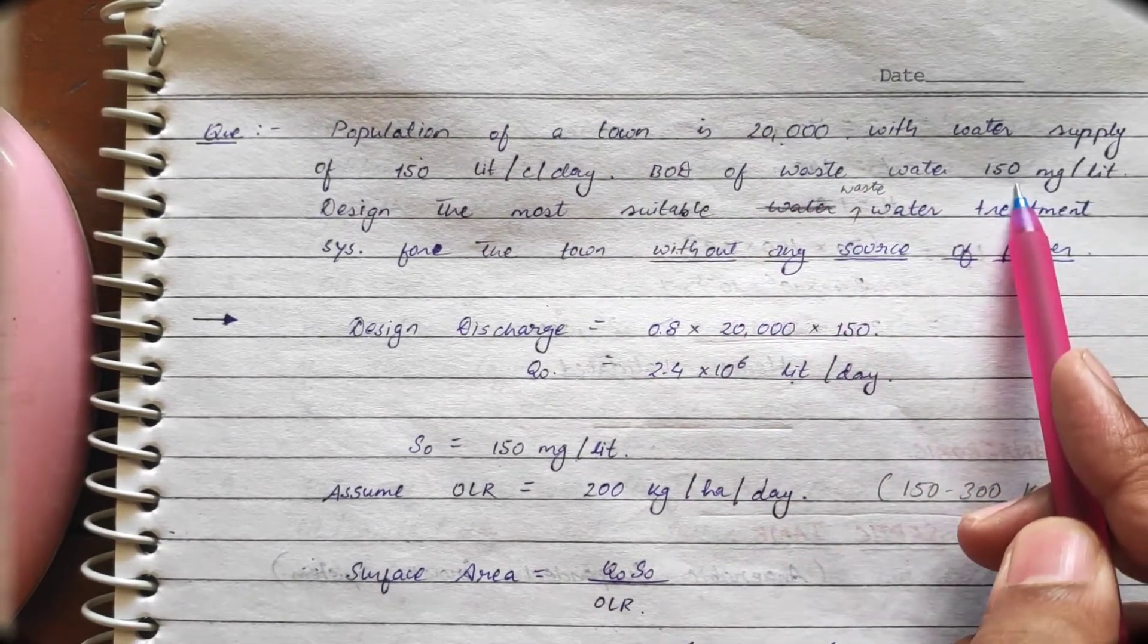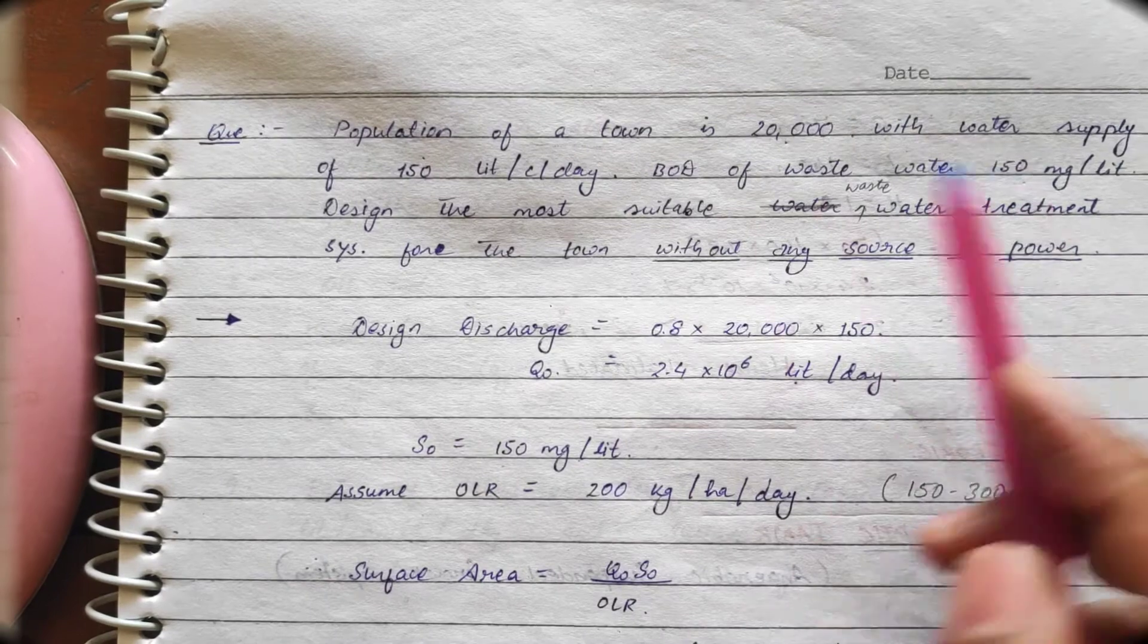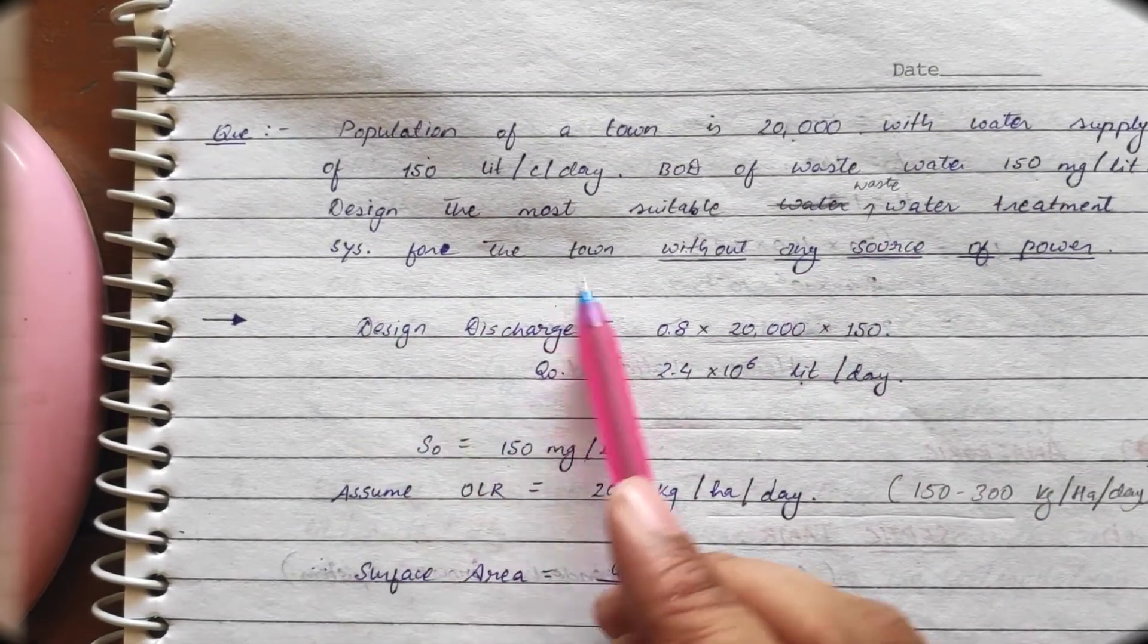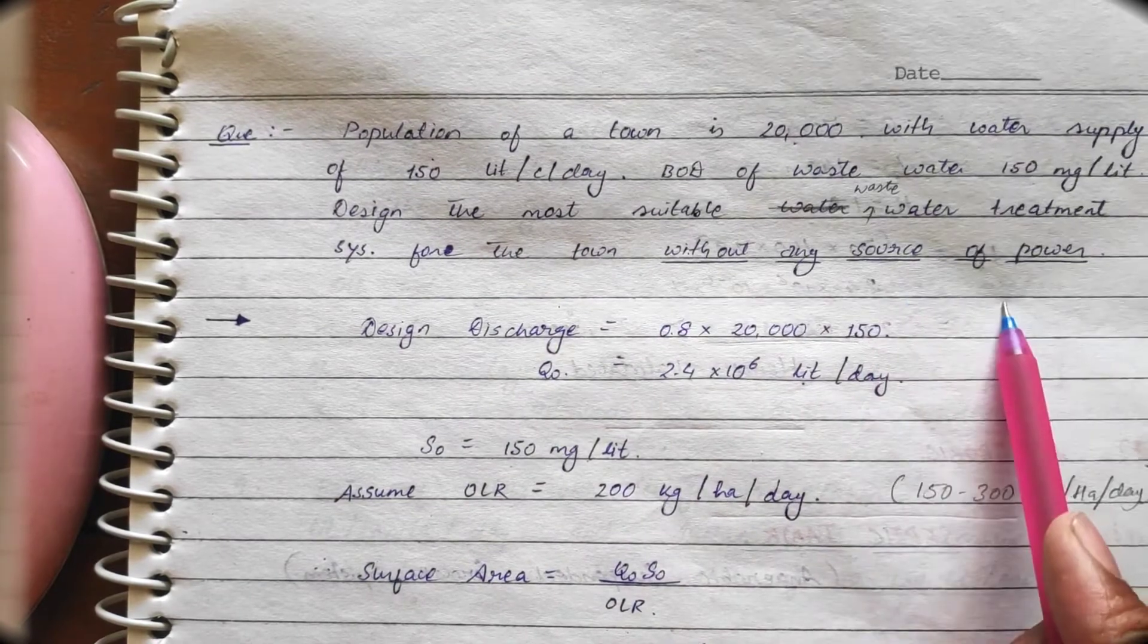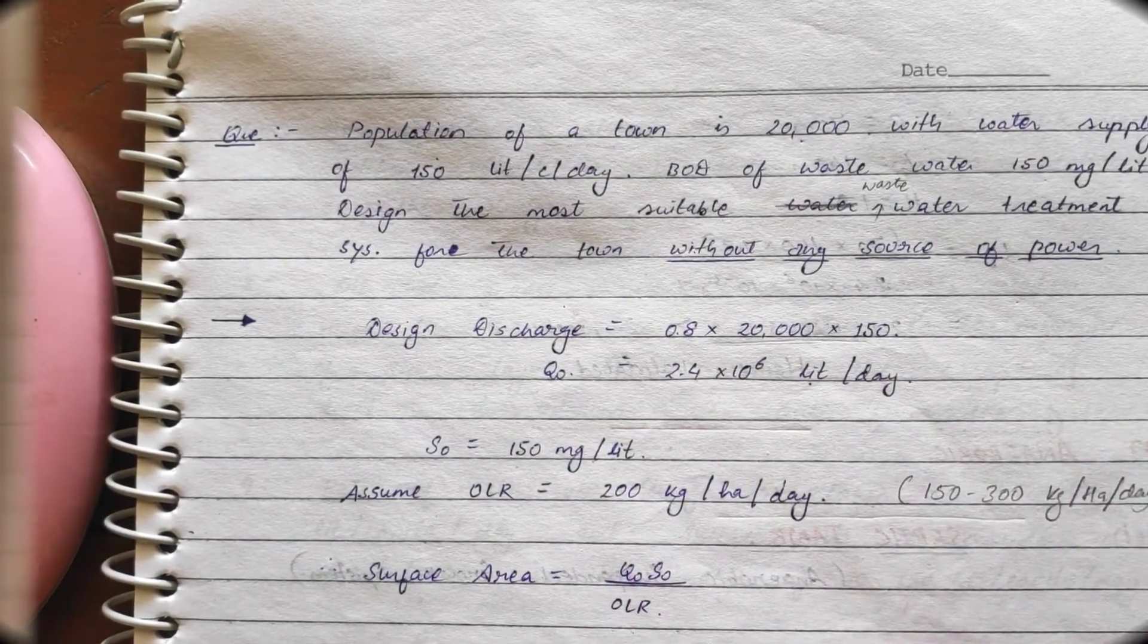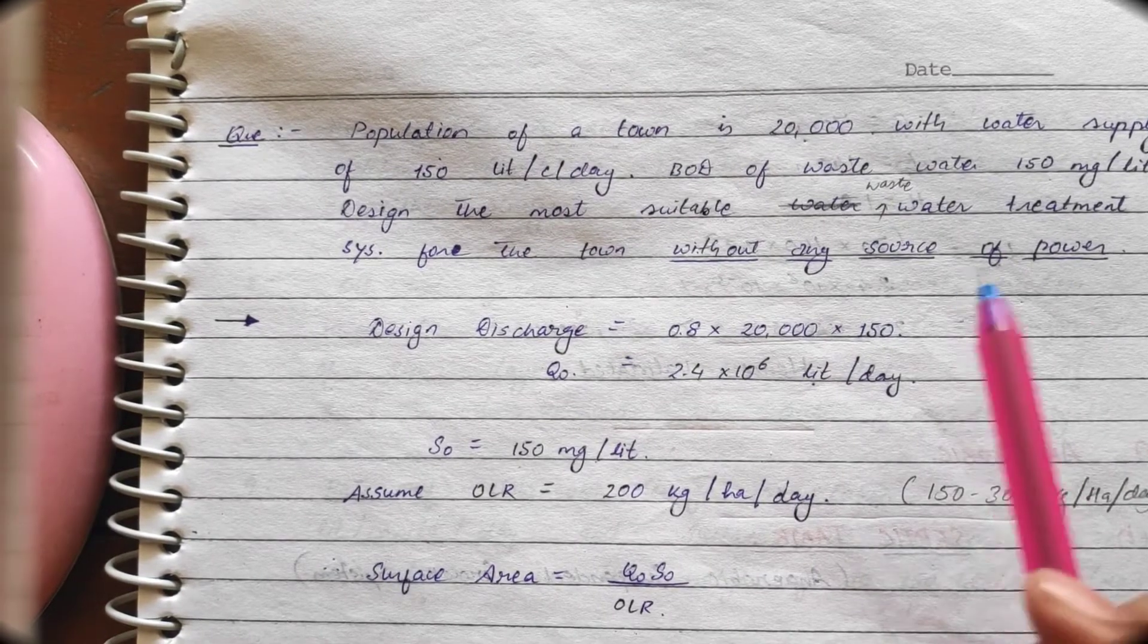Now, BOD of wastewater is what? This is value of S0. Design the most suitable wastewater treatment system for the town without any source of power. Now, here nothing is given that which kind of secondary biological treatment we have to design.